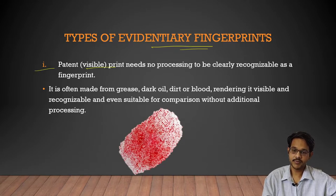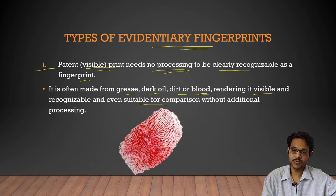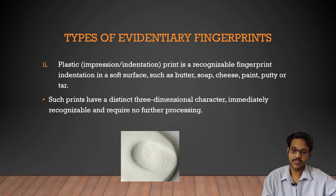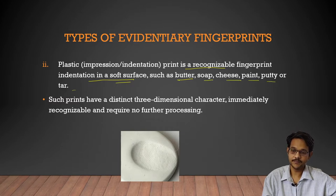Patent or visible prints need no processing and can be clearly recognized. They are often made by grease, oil, dirt, or blood, making them visible and suitable for comparison without additional processing. Plastic prints are fingerprints indented in soft surfaces like butter, soap, cheese, paint, or putty. They have distinct three-dimensional characteristics, are immediately recognizable, and require no further processing.